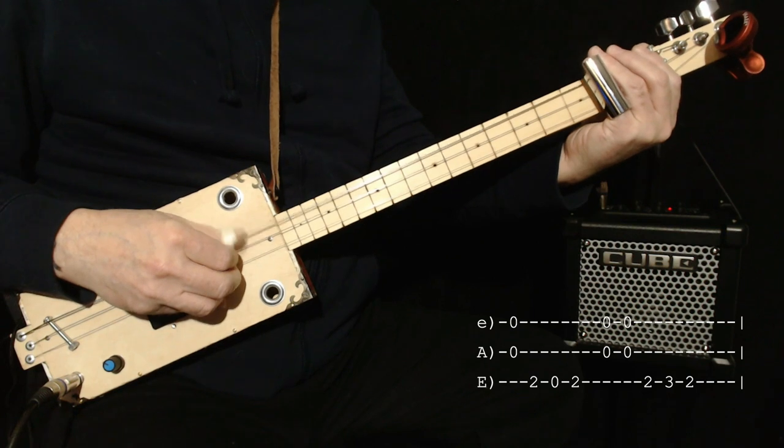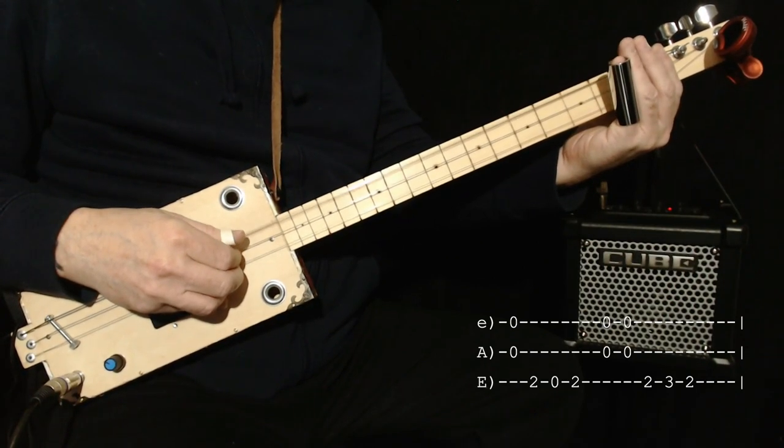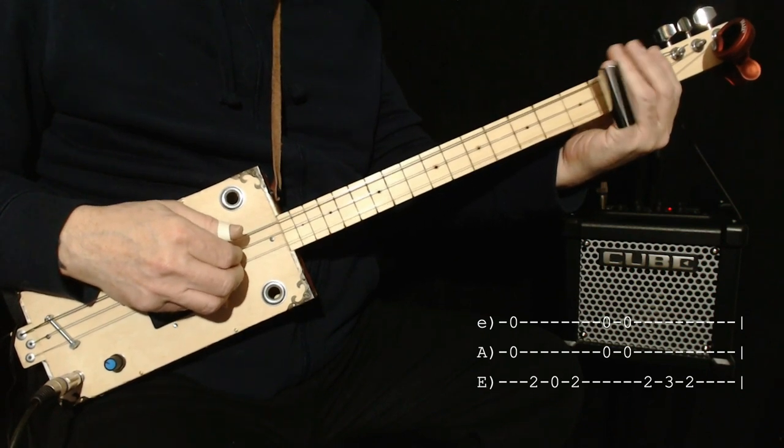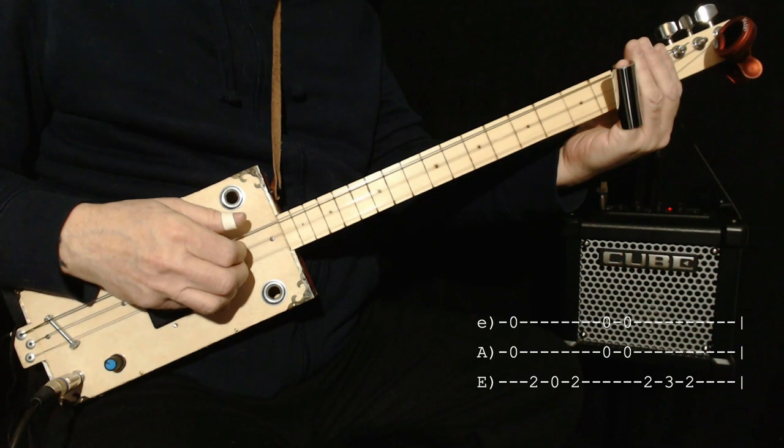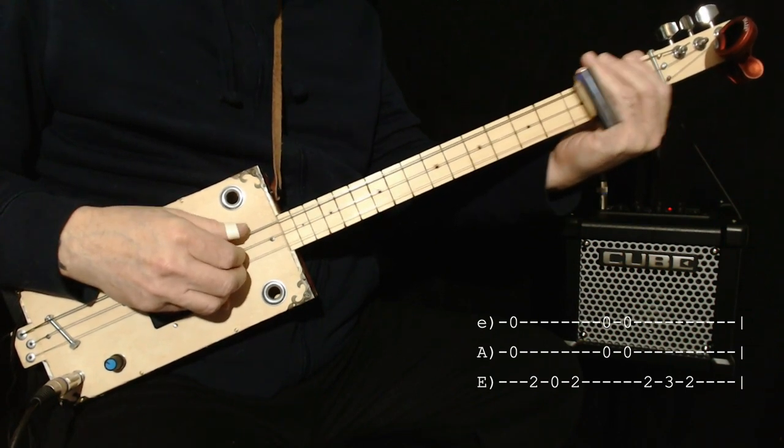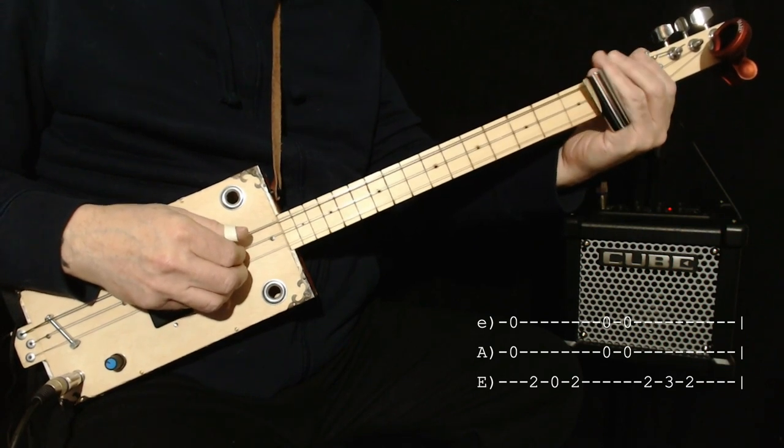Then I do the second fret on the lowest string. Then open. Then second fret. Then the chord. Then the second fret again on that little string. Then the third fret. Then the second fret. Then the chord.